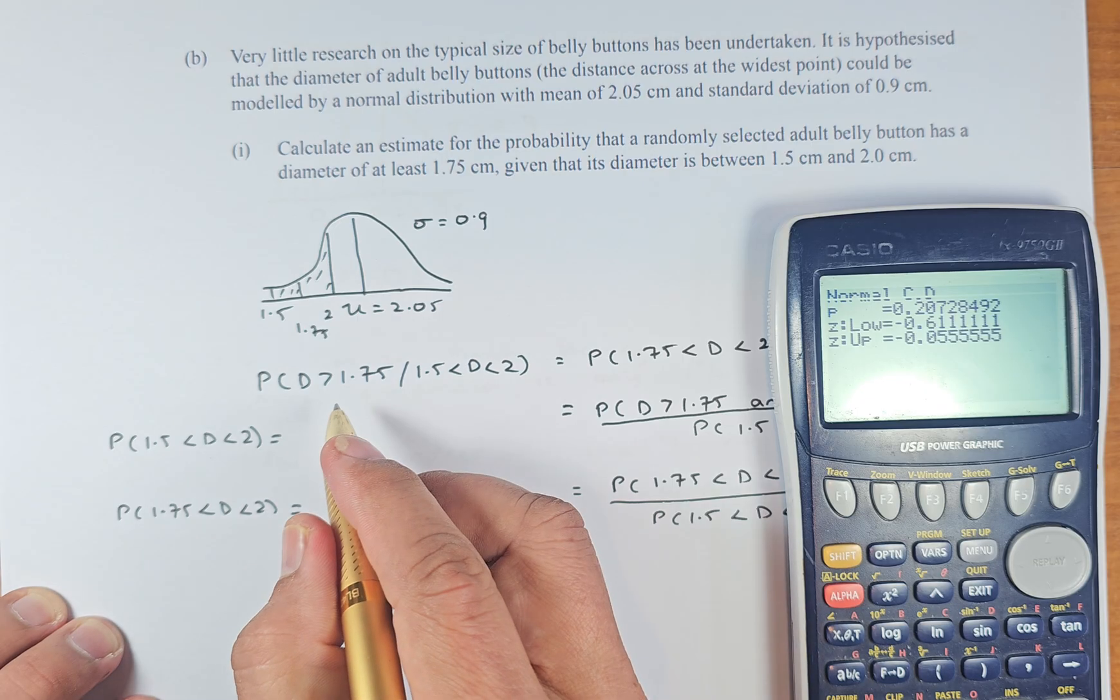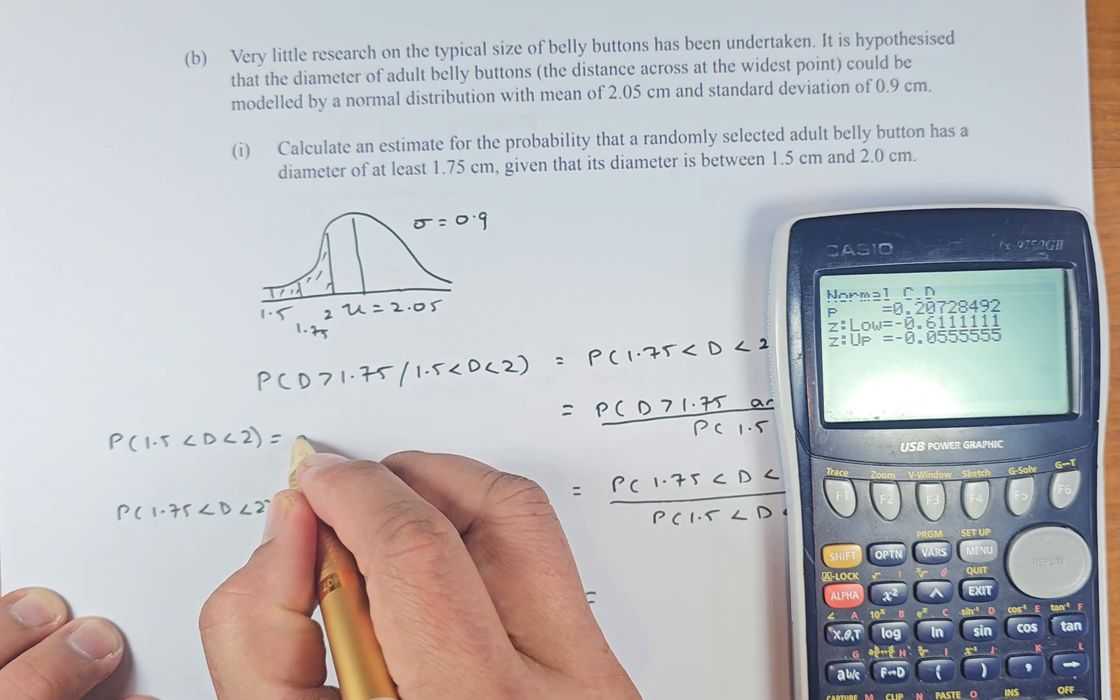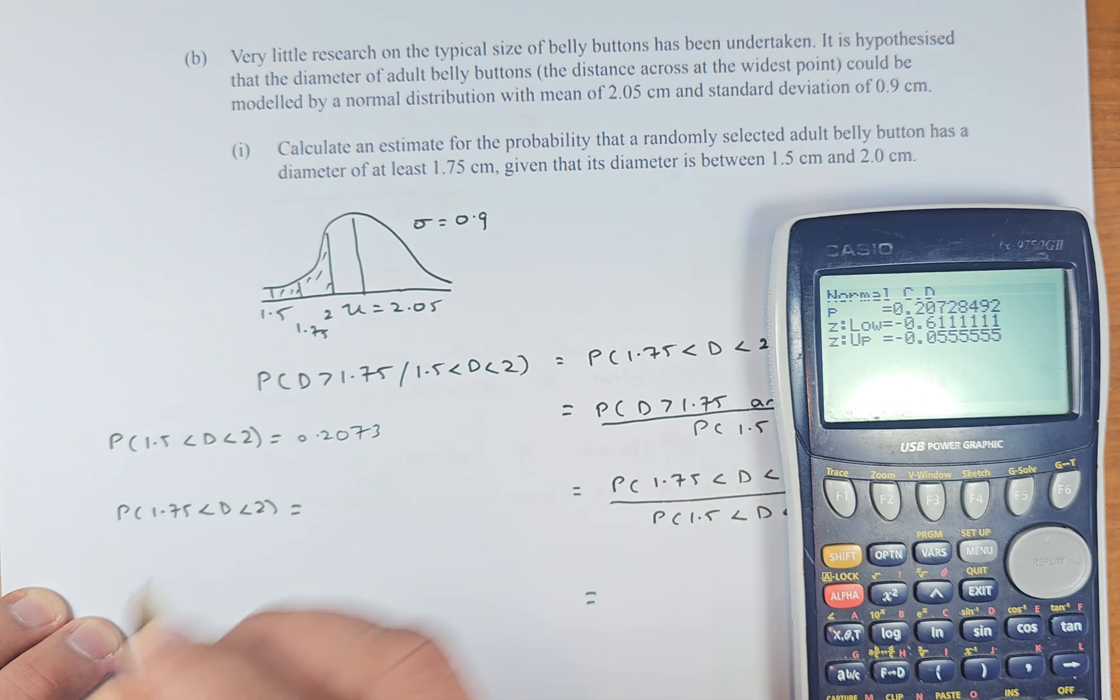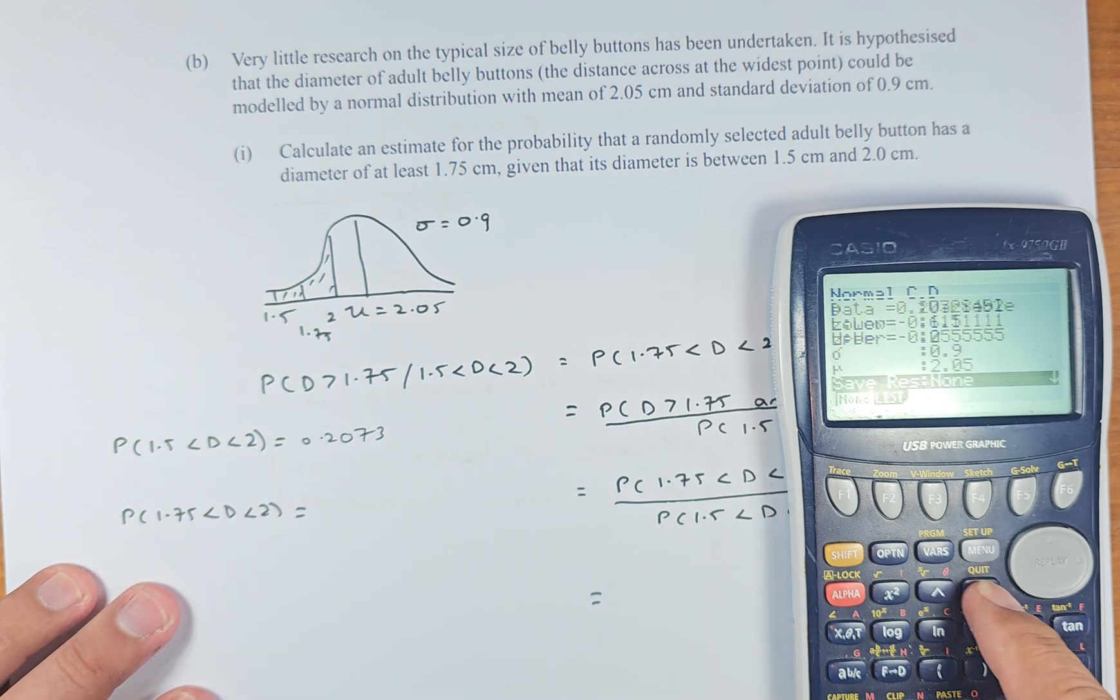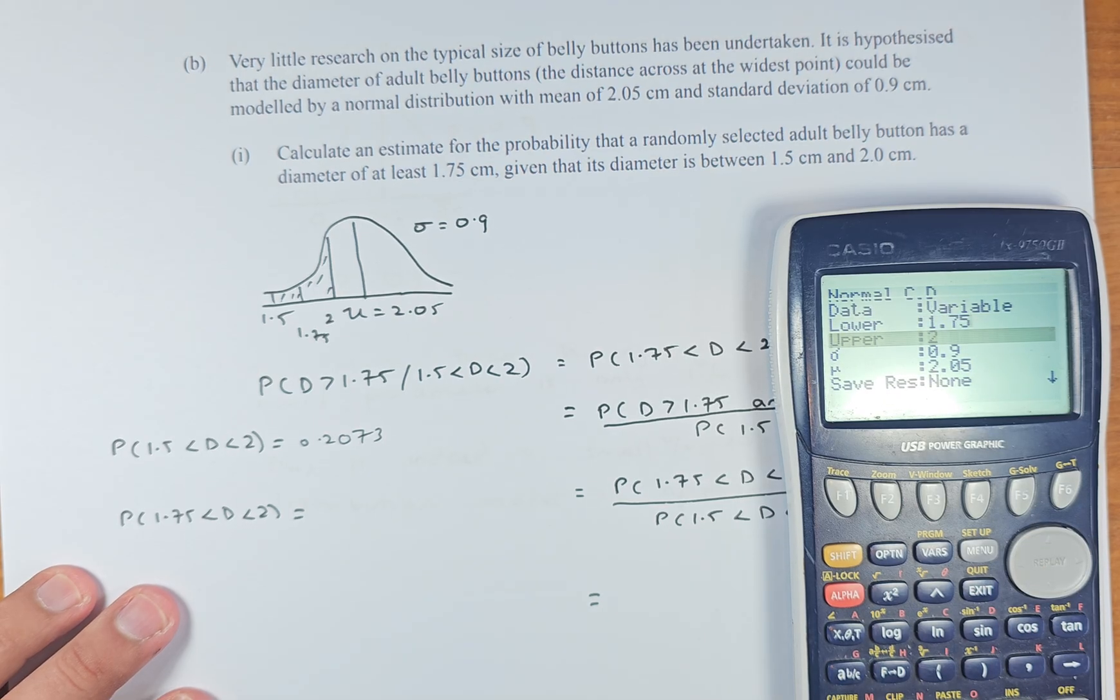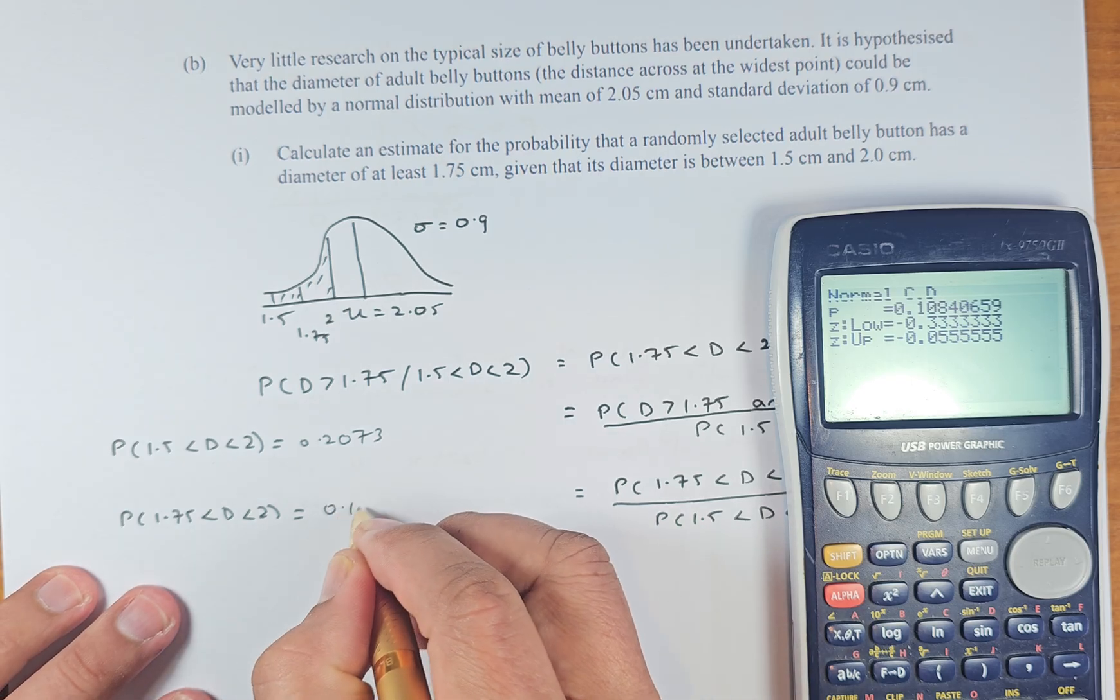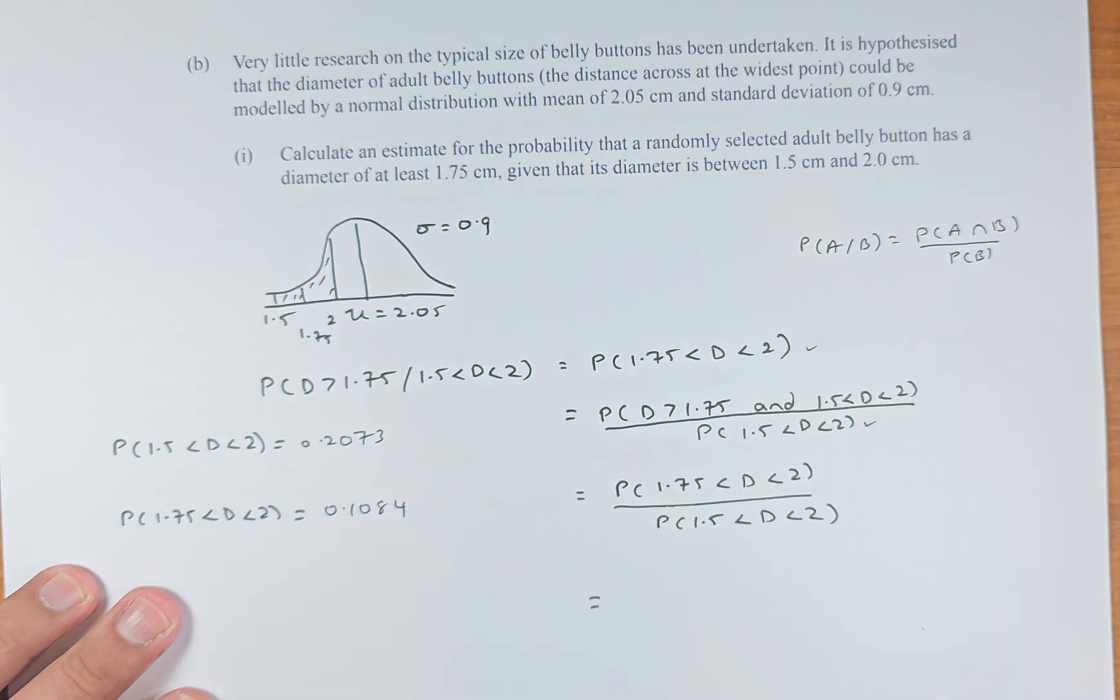And the answer is going to be 0.2073. That is the between 1.5 and 2. Now we do the same thing for between 1.75 and 2. It's the same thing. You just need to change the 1.5 to 1.75. And execute. Execute. And the answer is 0.1084. So we have calculated that. We can put this away for a while.